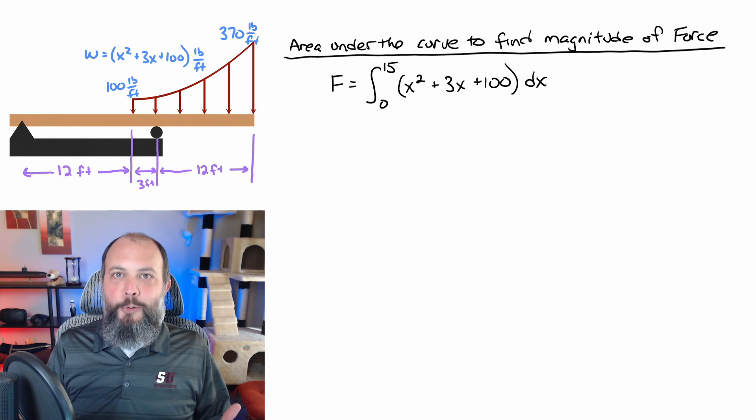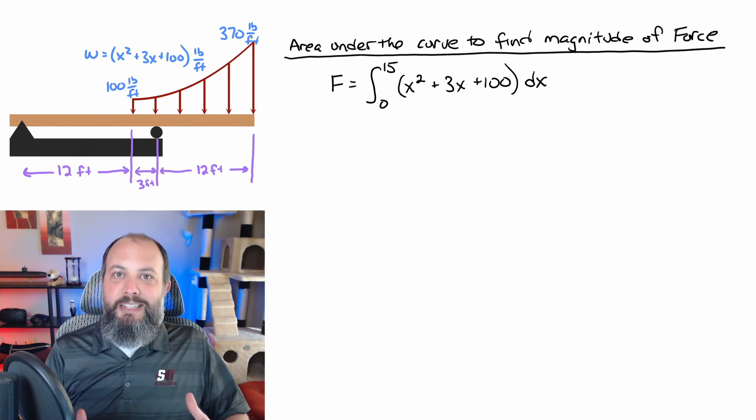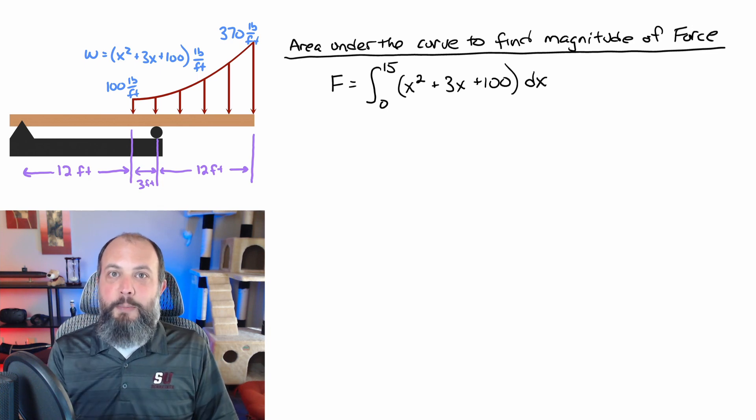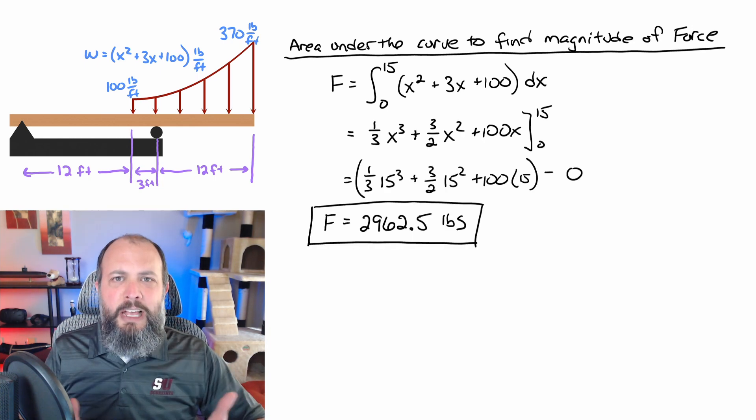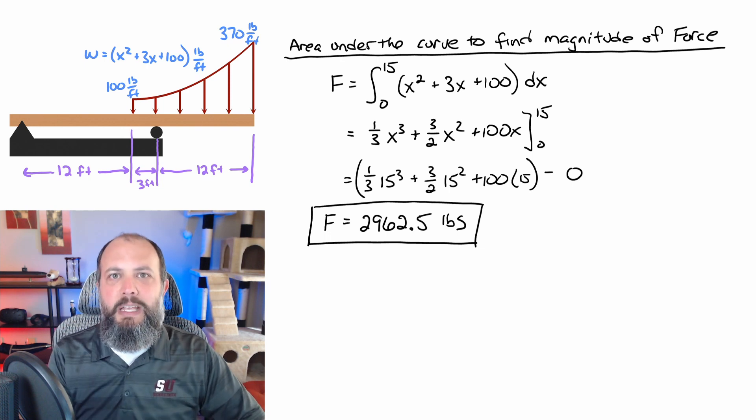So starting with the magnitude of the force, which is just a simple integral of a polynomial area under the curve and the base is 15 feet long. So that's why my bounds are from zero to 15. Do calculus gets us to about 3000 pounds, which is three kip, a kip being a thousand pounds, a kilopound.